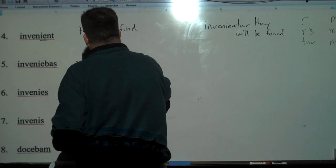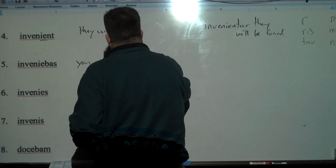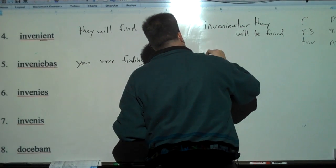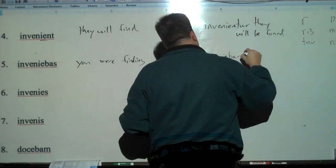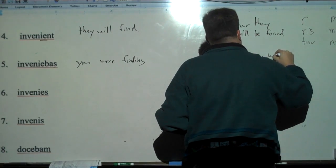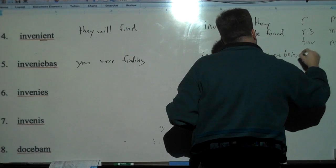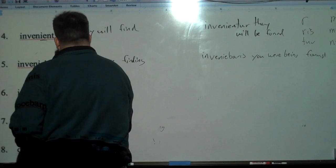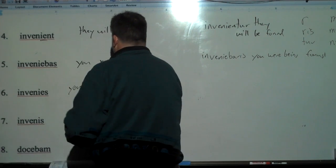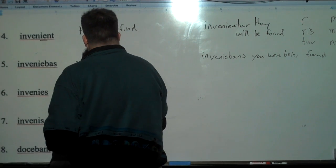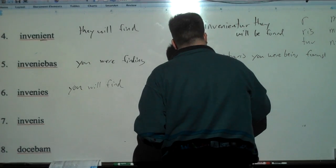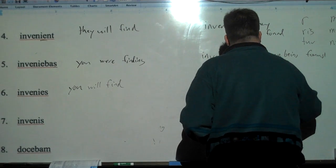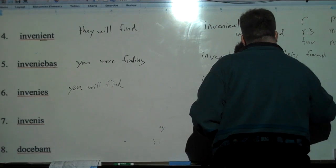Inveniebaris. S makes it you singular. B-A makes it imperfect. You were finding. Then you take the S off and put ris for the passive. Inveniebaris. You were being found. Invenies. It's still you. I-E makes it future. You will find. And then the passive, invenieris, you will be found.